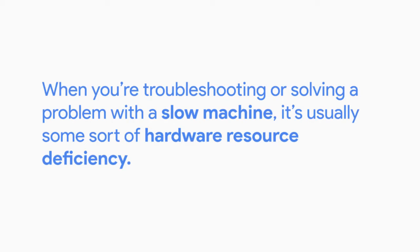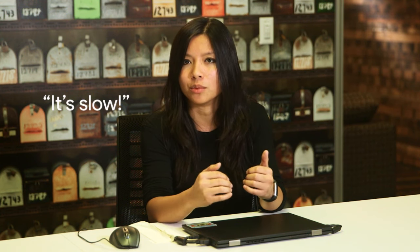When you're troubleshooting or solving a problem with a slow machine, it's usually some sort of hardware resource deficiency. If you don't have enough RAM, you can't load up as many processes. If you don't have enough CPU, you can't execute programs fast enough. If you have too much input coming into the device or too much output going somewhere, you'll also block other data from being sent or received. 'It's slow' is one of the most common problems you'll solve in an IT support role. Knowing the potential sources of that slowness is a big help when narrowing down the cause, and identifying a resource bottleneck in a server or large IT system can unlock performance gains for your users.